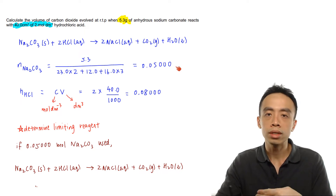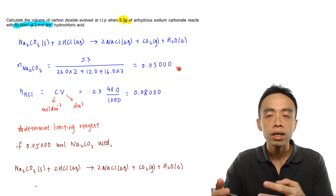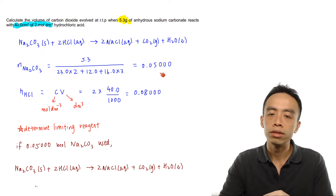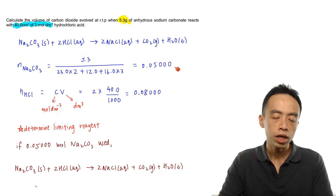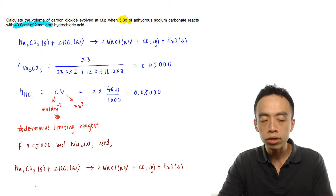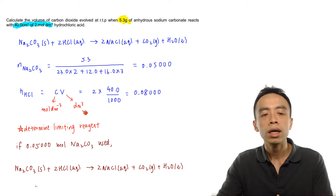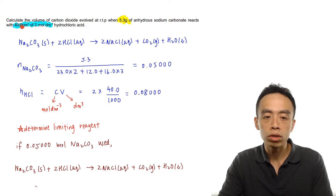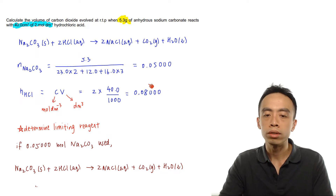Remember when answering calculation questions, intermediate answers should be given to 4 significant figures and the final answer to 3 significant figures — that is why we have 0.05000. The number of moles of HCl (a solution) is concentration multiplied by volume. The concentration is 2 mol/dm³ multiplied by 40.0 cm³ converted to dm³ (divided by 1000), giving 0.08000 moles of HCl.